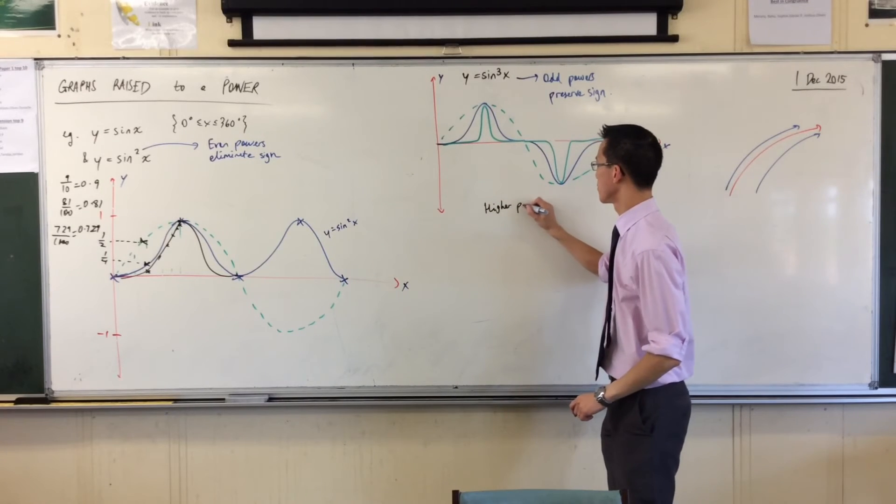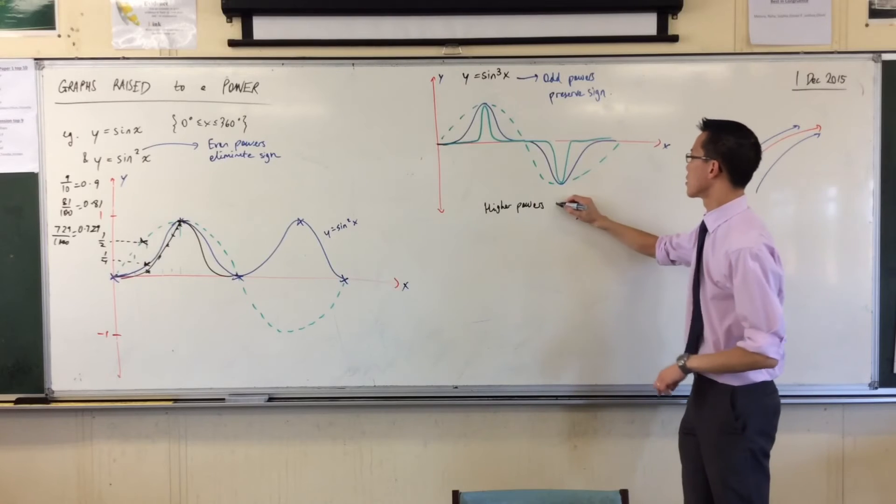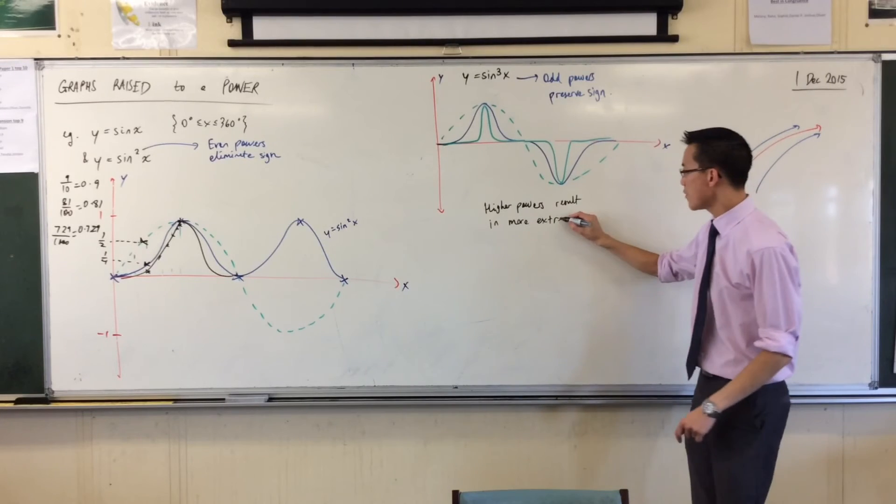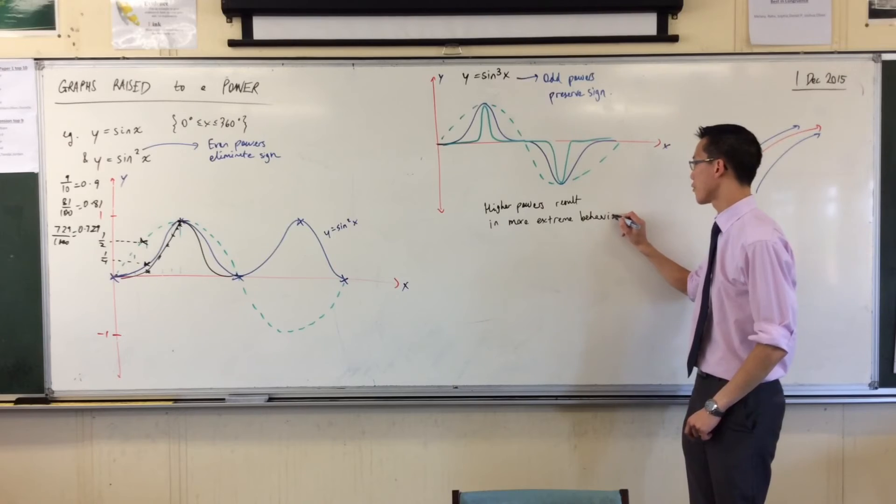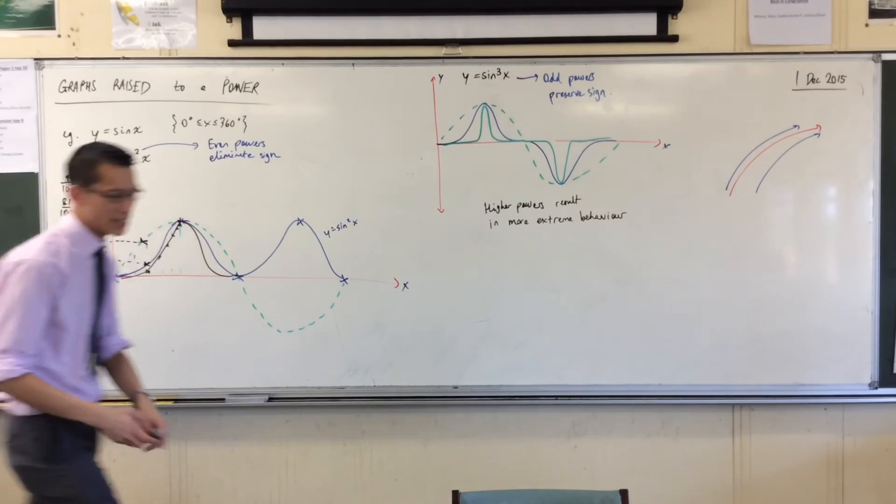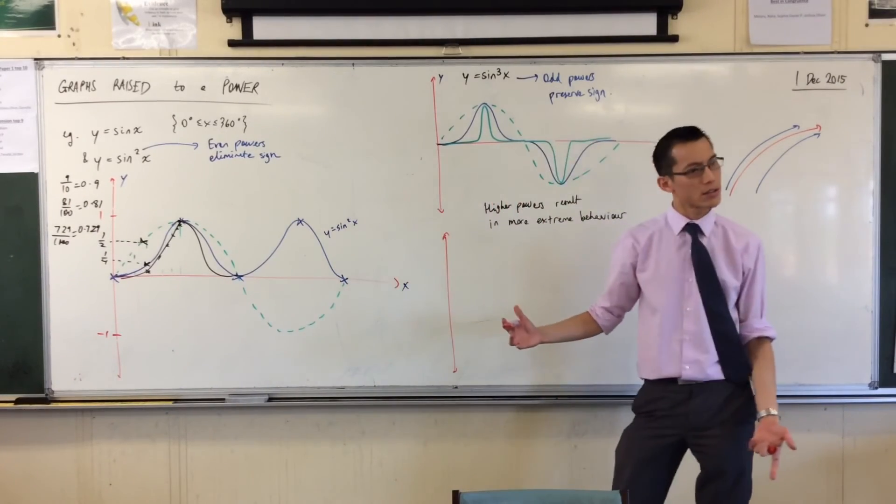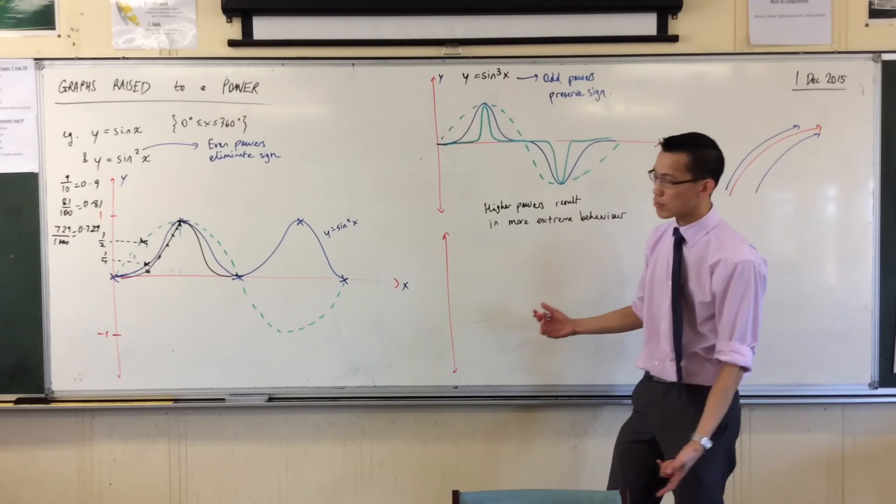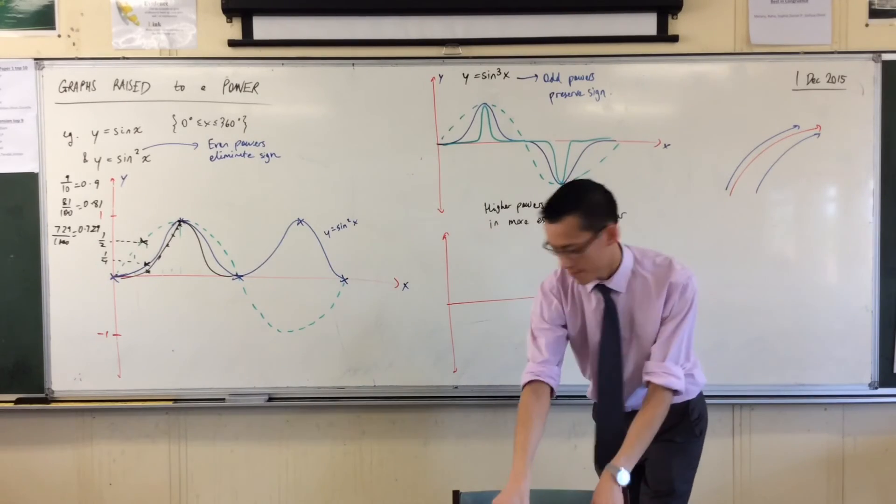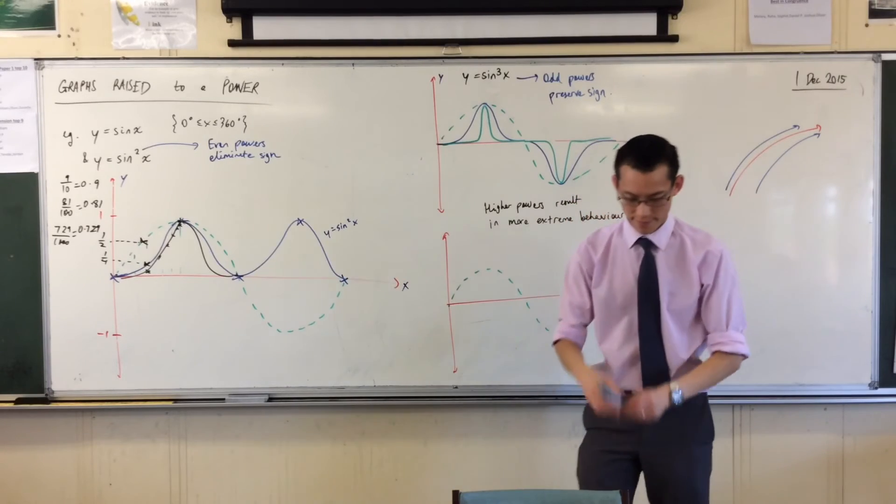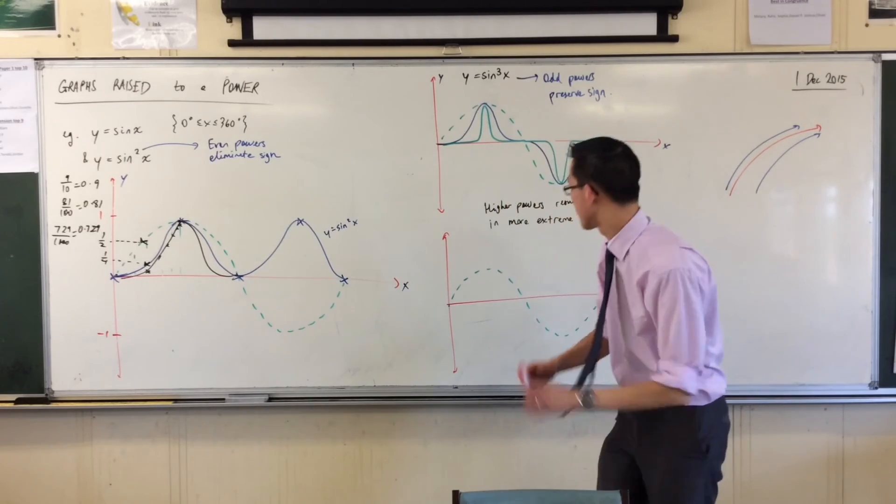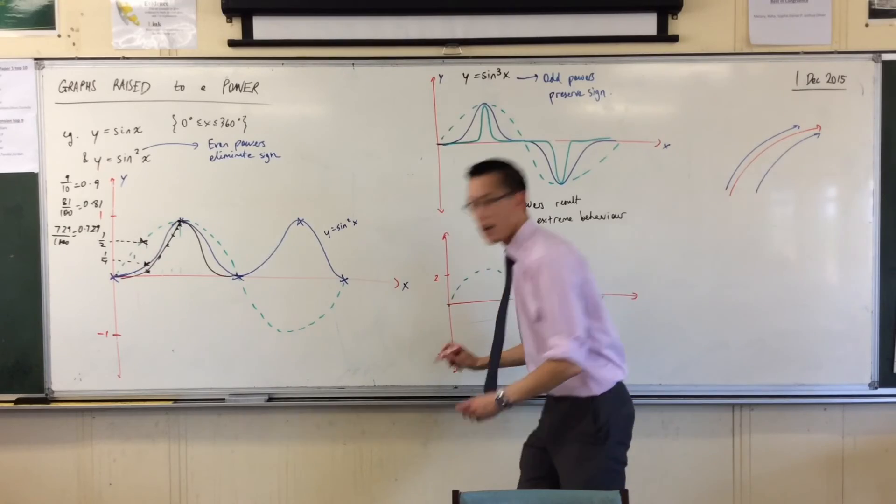Higher powers result in more extreme behavior. Your lows get lower and even though I don't have any of them on this particular graph, suppose our graph went outside one and negative one, right? Like suppose, actually, let's just quickly do this now informally. We just did sine x, right? Let's do two sine x. That's all we need. Now really quickly, we don't need to argue this too much.